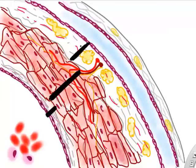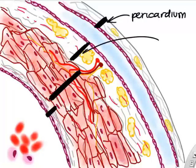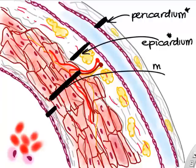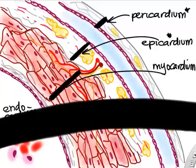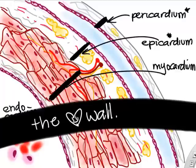To summarize the heart wall: we have the pericardium — the outer ziplock bag — then the epicardium as the outer surface of the heart, the myocardium as the middle contracting layer, and the endocardium lining the inside of the heart.